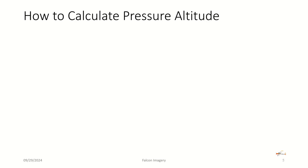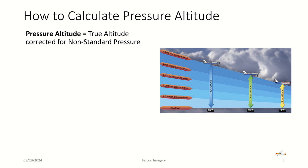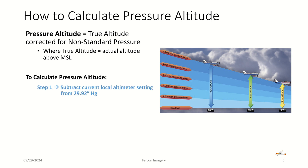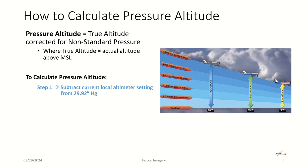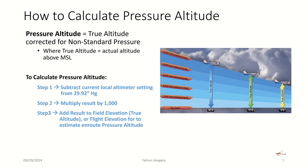So how do we calculate pressure altitude? Pressure altitude is the true altitude corrected for non-standard pressure, where true altitude is the actual altitude above sea level. You can see in this picture on the right, we may be flying at the same pressure altitude — let's say 5,000 feet — but based on the temperature, our true altitude above the Earth could be lower, and that's when you factor in the density altitude, which we'll get to a little bit later. To calculate pressure altitude, we first subtract the current local altimeter setting from 29.92 inches of mercury, multiply that result by 1,000, and then add the result to the field elevation, or the true altitude, or flight elevation to estimate en route pressure altitude.